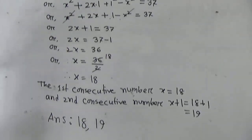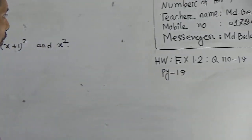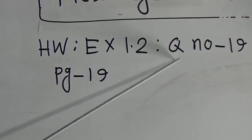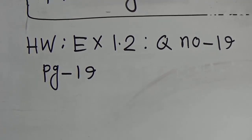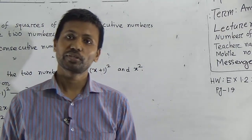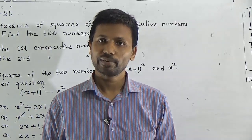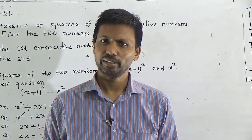Hope you understood, dear students. Now look at your homework: HW is Exercise 1.2, Question Number 19, page 19. This is important for you because on the basis of submission of your HW copy you will get your CT marks, diary marks, and HB marks. You have to submit these HW copies every Sunday within 8 a.m. to 4 p.m.